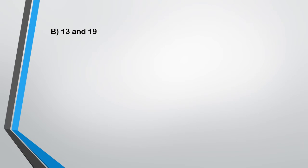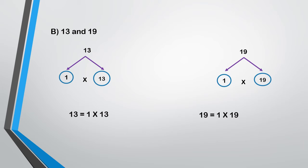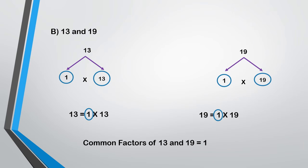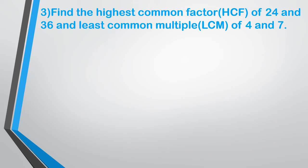Sum b: 13 and 19. We draw a factor tree for 13. 13 doesn't have any other factors except 1 and 13, so 13 is equal to 1 into 13. Similarly, 19 doesn't have any other factors except 1 and 19, so 19 is equal to 1 into 19. The common factors of 13 and 19 is equal to 1, so the HCF is also 1.